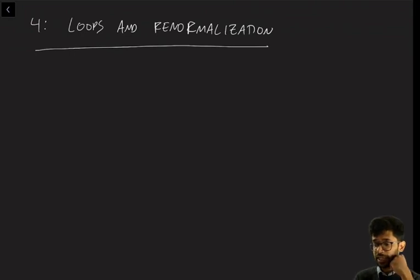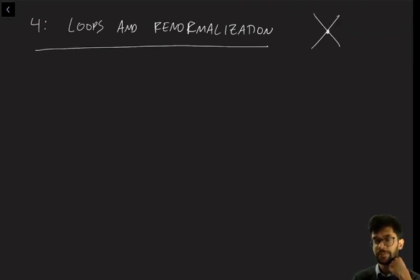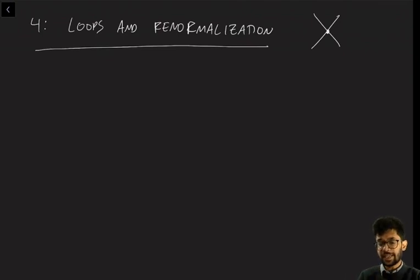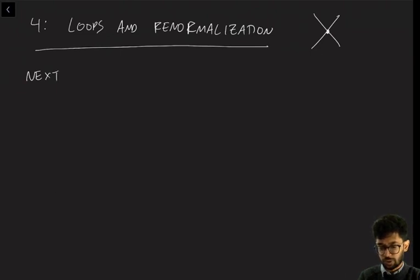If you recall last time, we calculated the scattering amplitude to first order in lambda, and we found that the whole answer came from a diagram that looked like that. Let's now go to next order in lambda — in other words, let's calculate the scattering amplitude to order lambda squared.